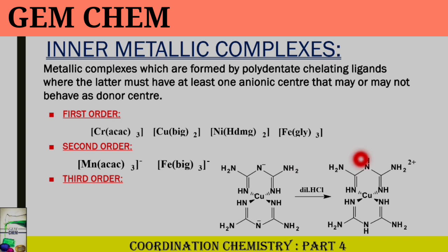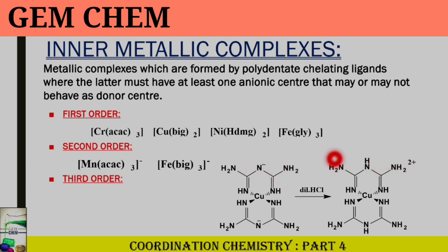In the third order, these are cationic complexes where there is a 2+ charge. Here the charge of the metal ion is only partially satisfied by the anionic polydentate ligand. Once you add dilute HCl, you can see that the complex becomes cationic. So the first one is first order whereas the second one is third order.